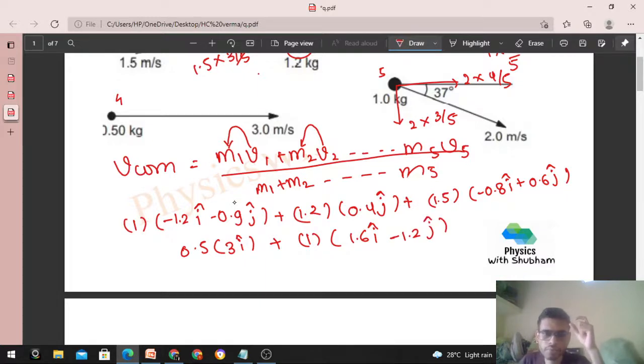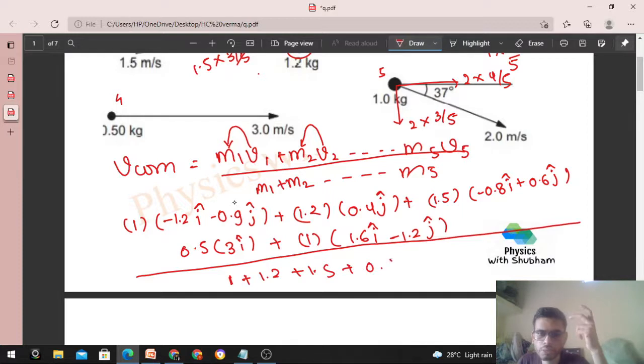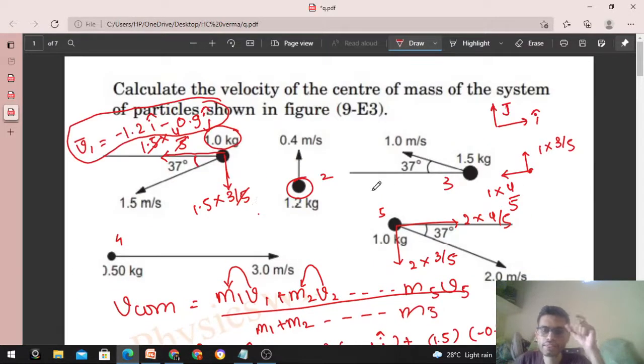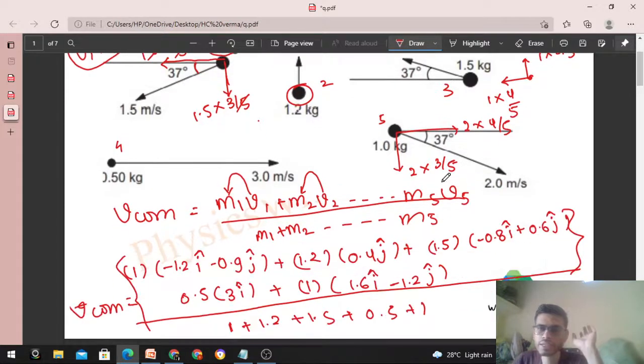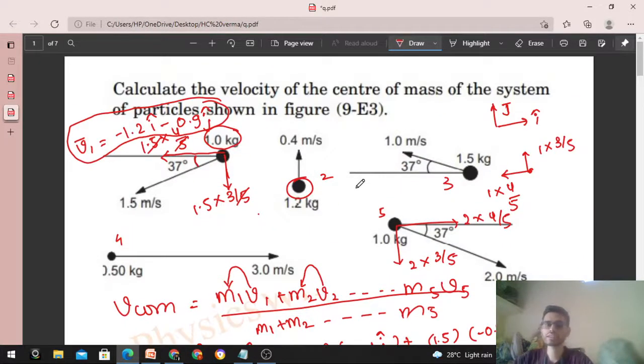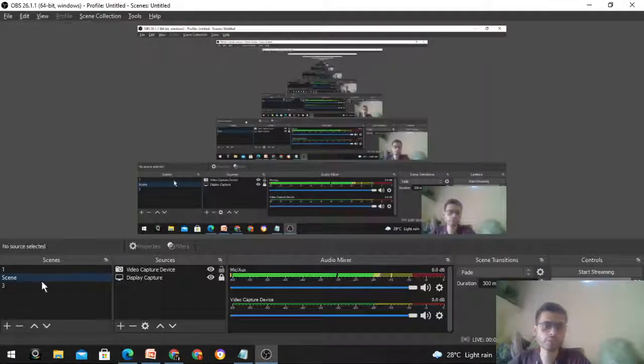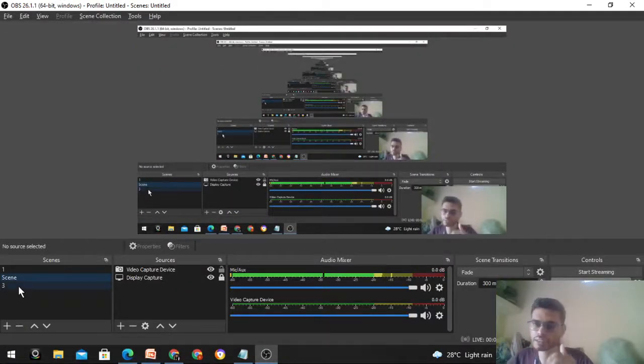So this is your numerator and in the denominator what should come? Total mass. 1 plus 1.2 plus 1.5 plus 0.5 plus 1. Fine. So this is the velocity of center of mass. And now only calculation remains. So I think calculation you can do yourself. And this way we can find the velocity of center of mass. So I think it's clear. Let me know if you still have any confusion, we can discuss further. Okay guys, keep working hard. Best of luck. Bye.